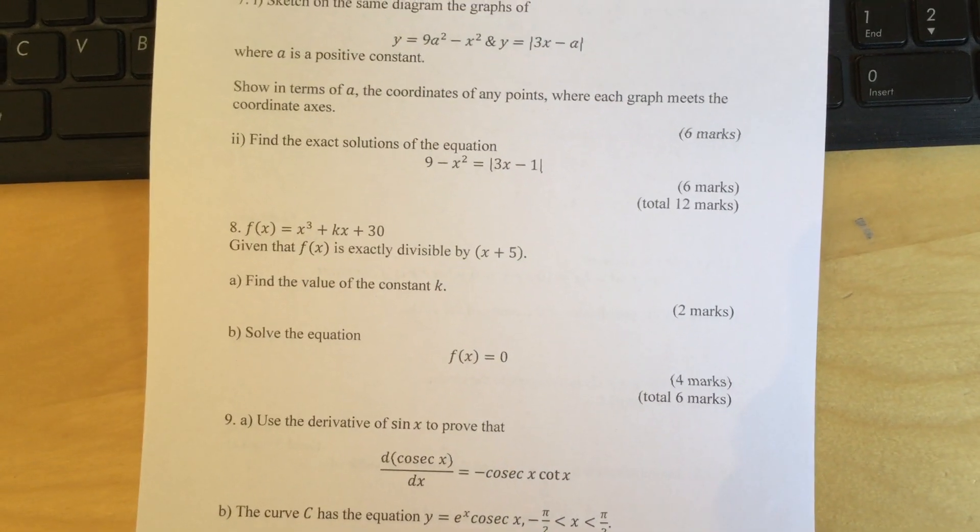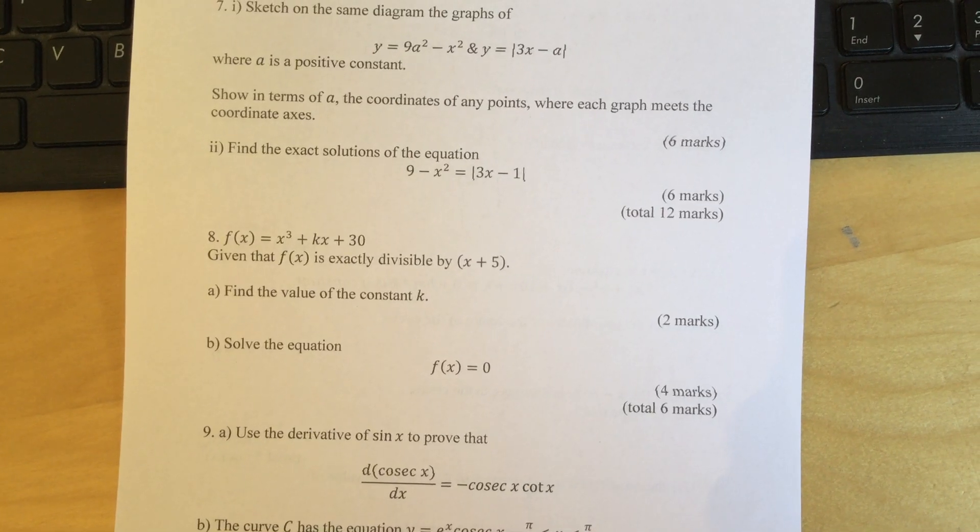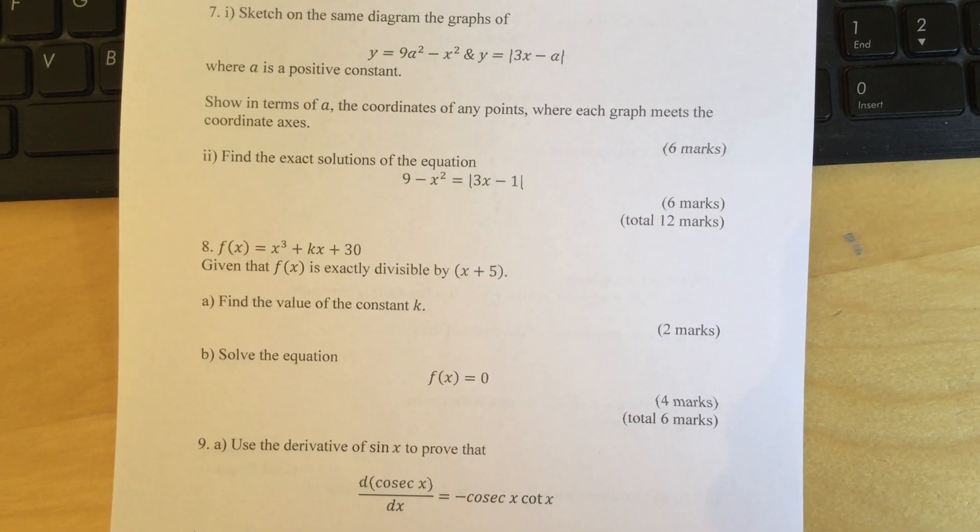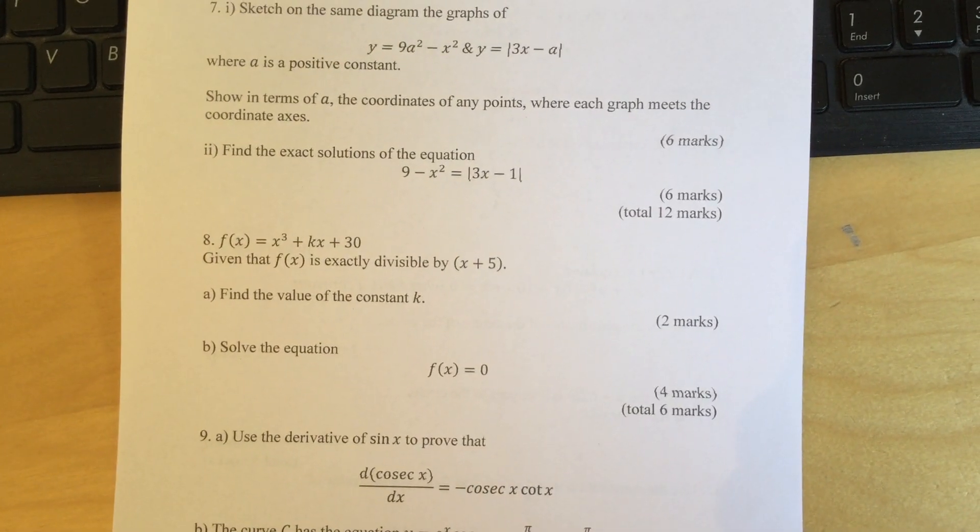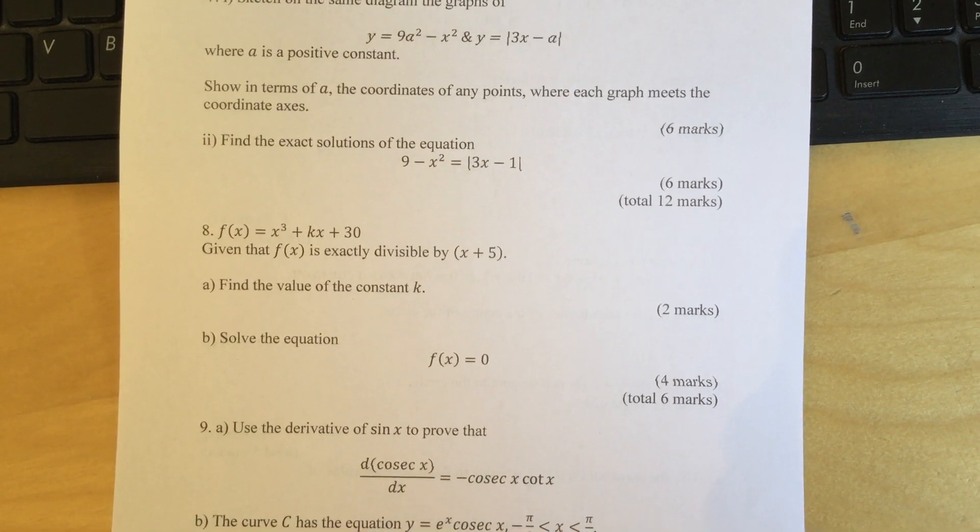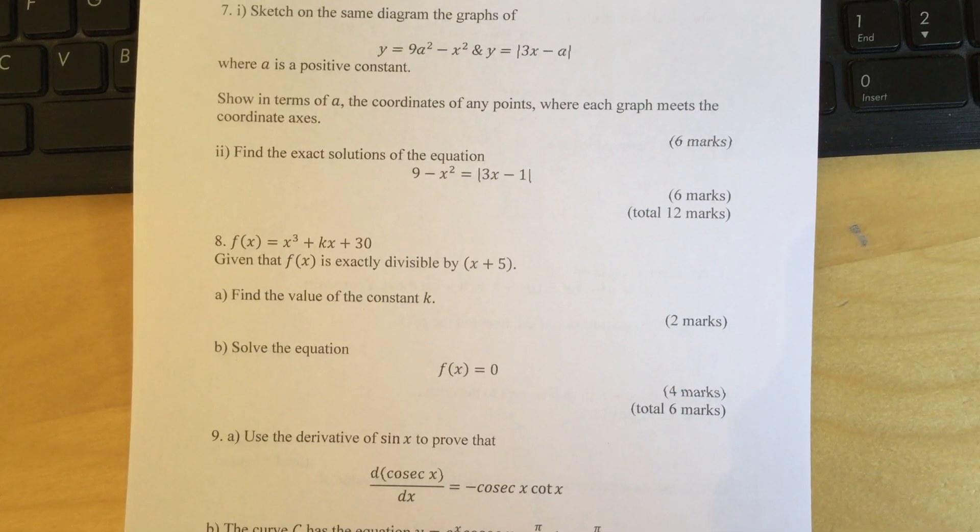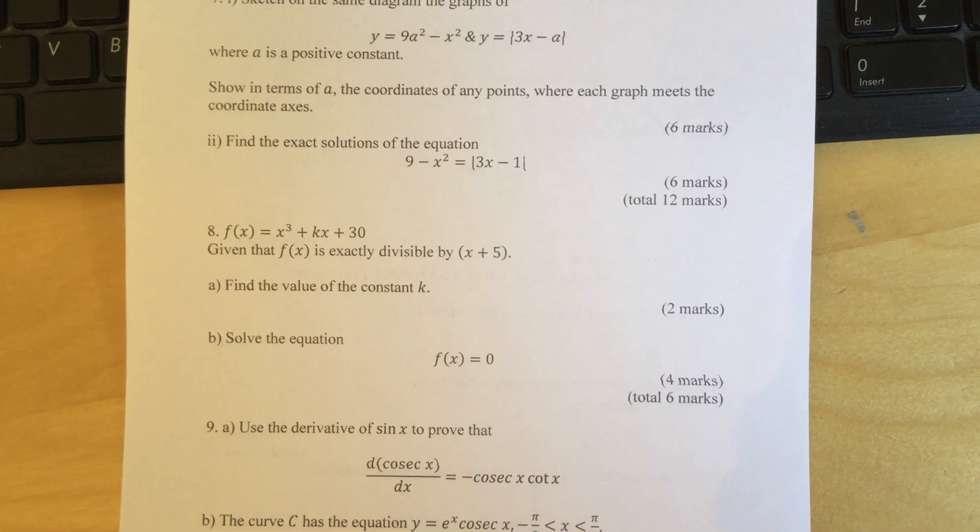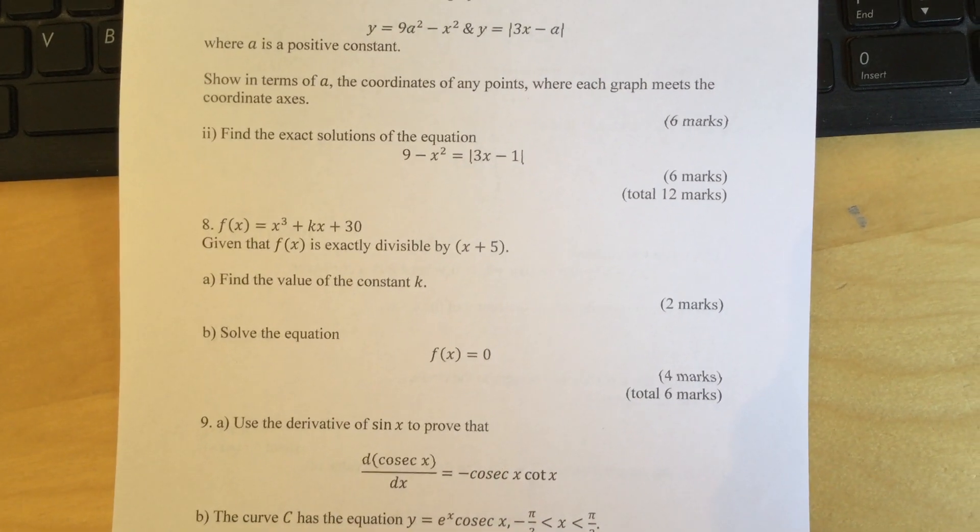Question 8: f(x) = x³ + kx + 30. Given that f(x) is exactly divisible by (x + 5), find the value of constant k. Part B: Solve the equation f(x) = 0.